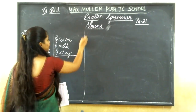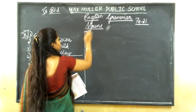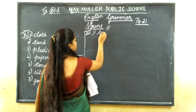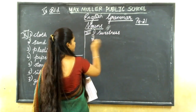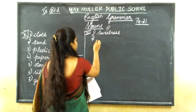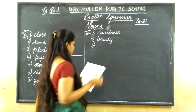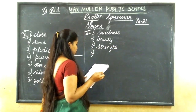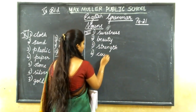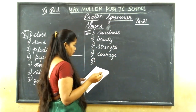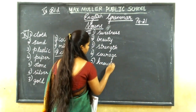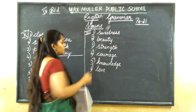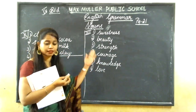I will write the answers — you have to write the numbers. Sugar has the abstract noun sweetness. Flower is beauty. Milk gives strength. Soldier — courage. Book — knowledge. Paris — love.